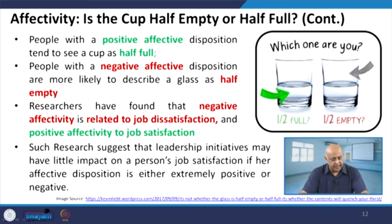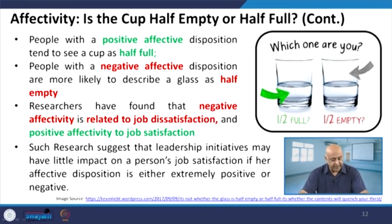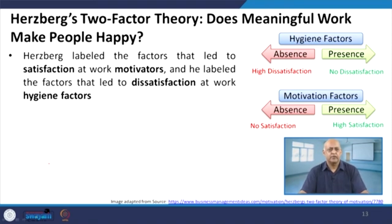Can we have negative affectivity related to job satisfaction and positive affectivity with job satisfaction? Our role and responsibility is to convert this negative affectivity to positive affectivity — that is a leader's role. Such research suggests that leadership initiatives may have little impact on a person's job satisfaction if their affective disposition is either extremely positive or negative. The leader will be influential only to a certain extent, because if the follower has a negative approach, the leader will not be able to influence much, as far as the affectivity theory is concerned.